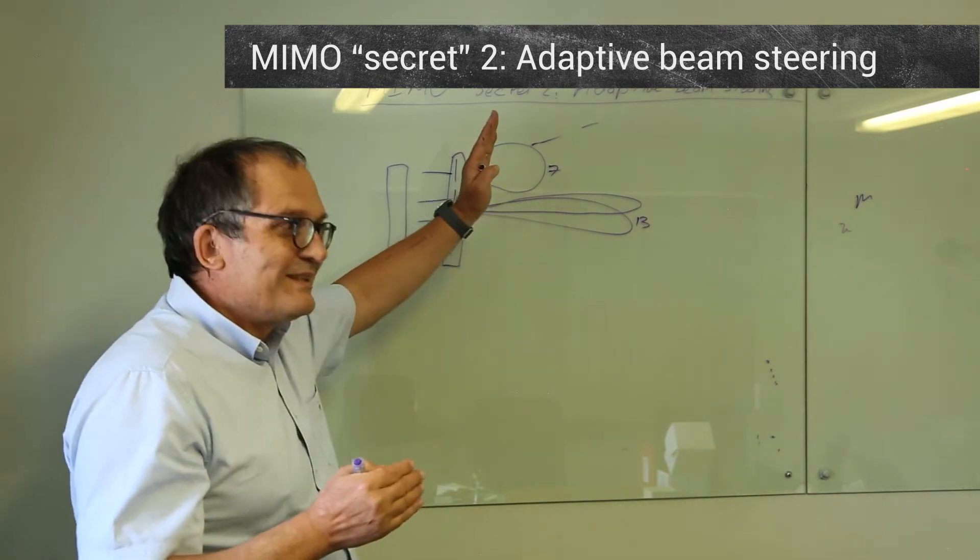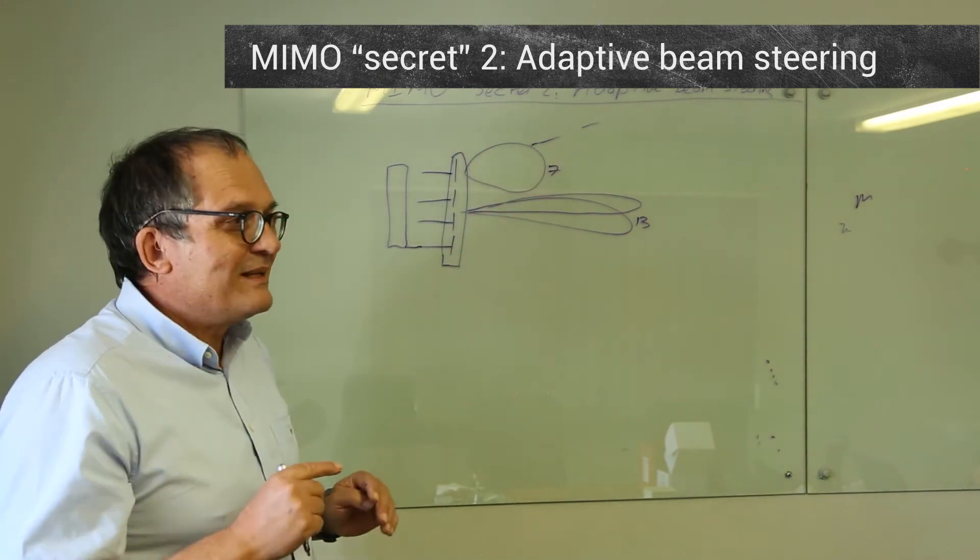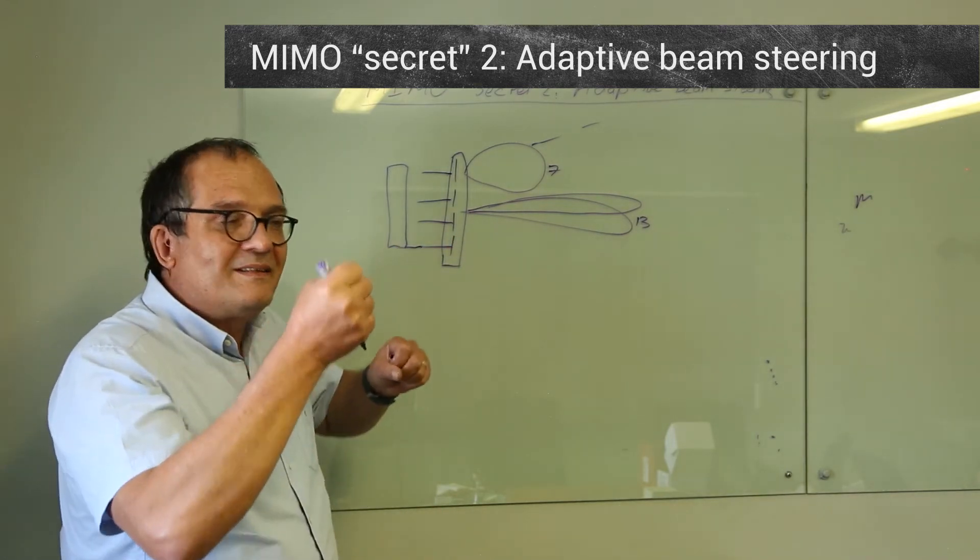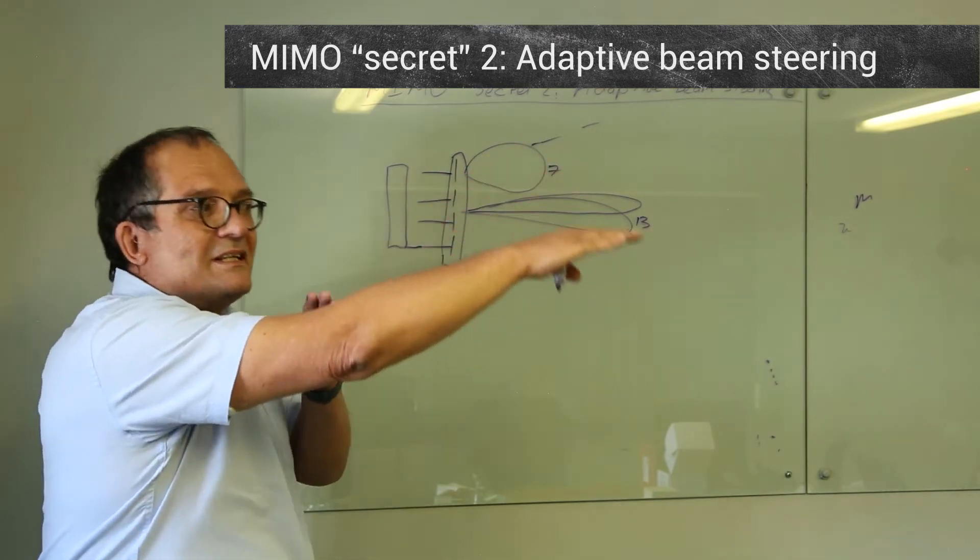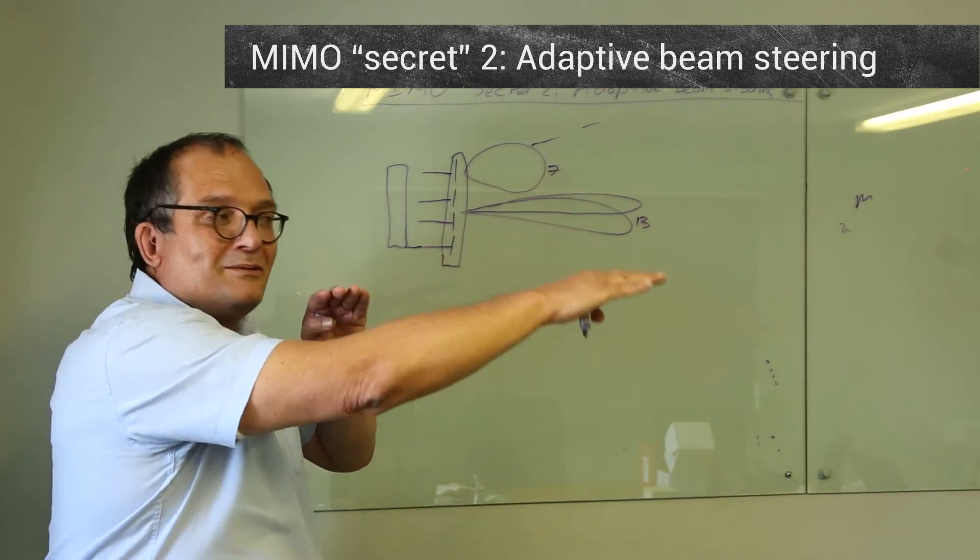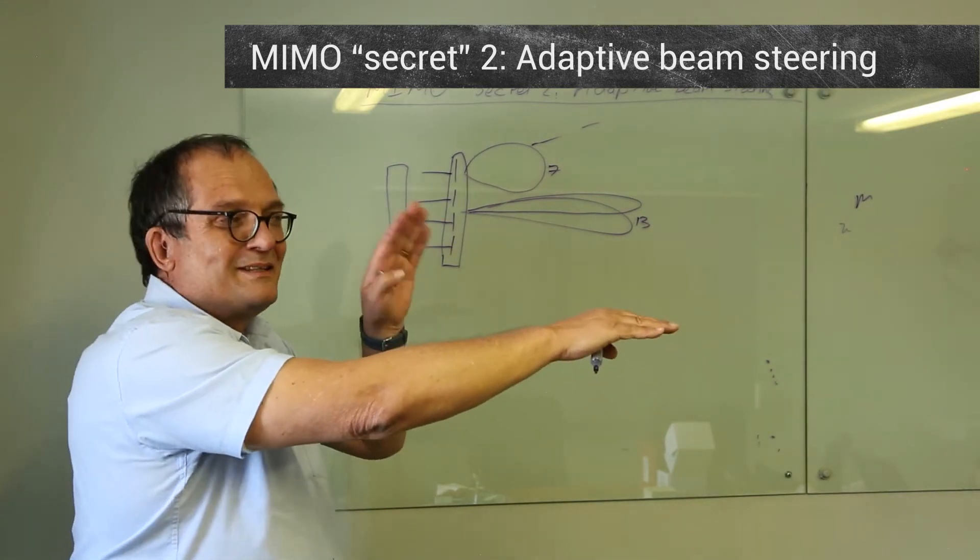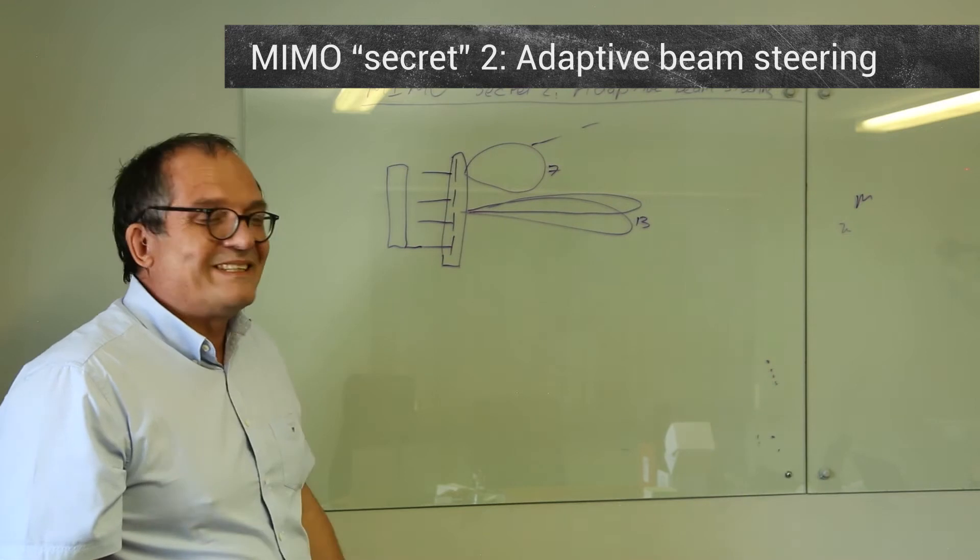So as that thing tilts, that beam will steer up and down, so no longer do we have the problem. As the yacht tilts, it will keep it aimed at the base station. Isn't that magic?